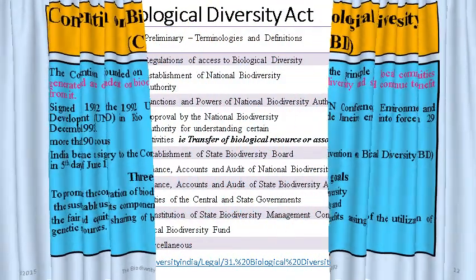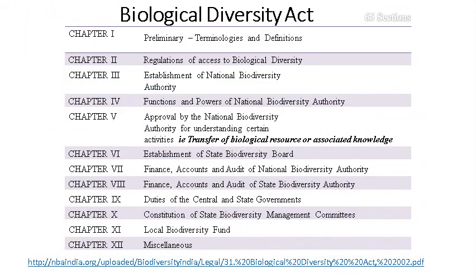Now we will start with the Biological Diversity Act. It is a very big act which contains around 12 chapters and 65 sections. All these chapters are available at the National Biodiversity Authority website, where you can find the whole document.